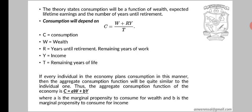C — consumption — equals wealth plus r times Y, where rY means years until retirement multiplied by income. This captures the total expected income one will earn over the remaining working life.